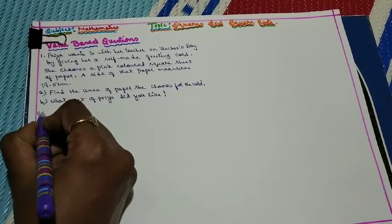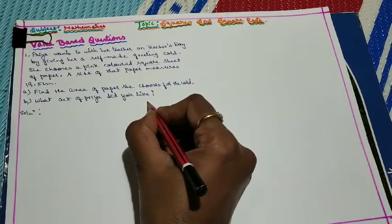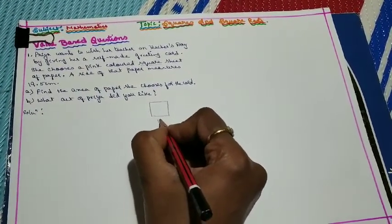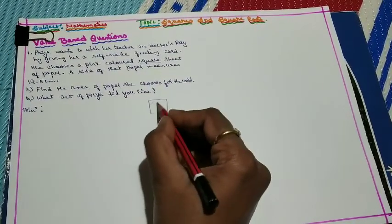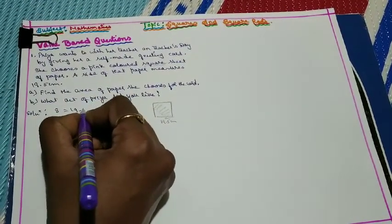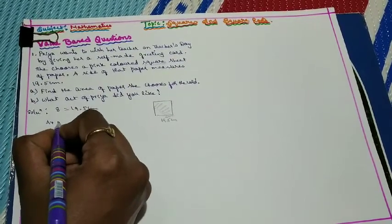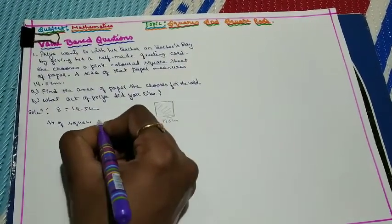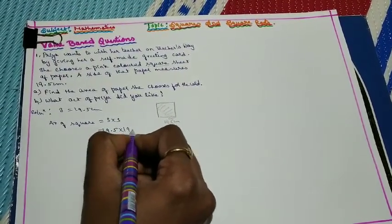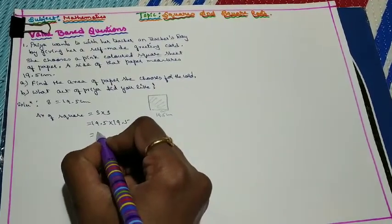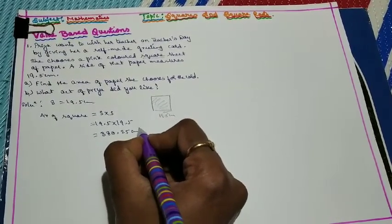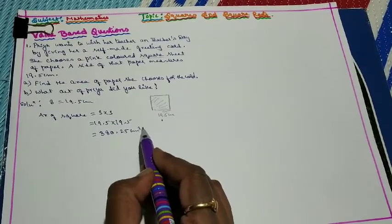Solution: The dimension of the paper is a square sheet whose side measures 19.5 cm. We know that area of square = S × S = 19.5 × 19.5 = 380.25 cm².